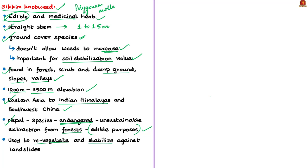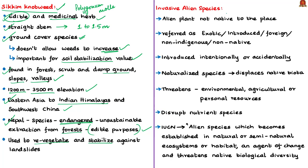In the beginning we saw that Sikkim knotweed is an invasive species, so let us understand what this actually means. Invasive species or invasive alien species is an alien plant — not native to that place — belonging to a foreign country or some other location. These invasive species are also referred to as exotic species, introduced species, foreign species, or non-indigenous or non-native species. They are species introduced by humans, intentionally or accidentally, from one region to another.